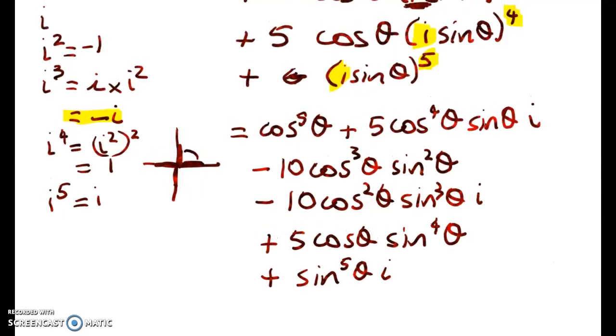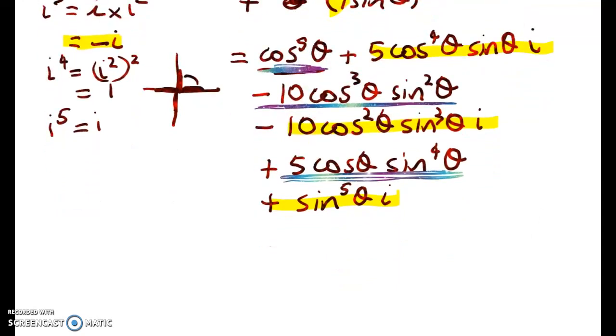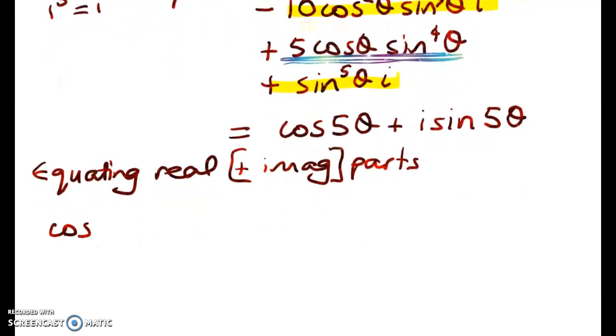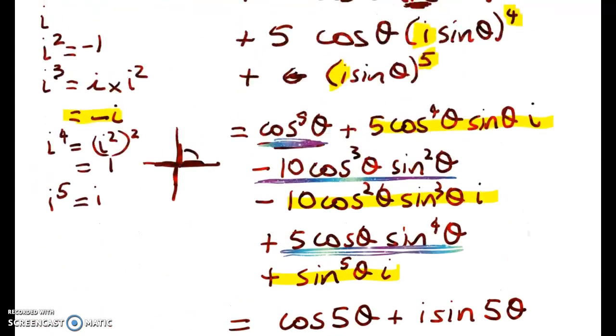So you can see that by using my powers of i, what I've now got is a bunch of terms that are real. So that one's real and that one's real. Now these ones, that one's imaginary, that one's imaginary, and that one's imaginary. So we're ready now to equate the left-hand side and the right-hand side. So we know that all of this is equal to cos of 5 theta plus i sine of 5 theta. So then we need to explain what we're doing. So equating real and imaginary parts. Well, actually, we're not going to bother with the imaginary parts. We're just going to dump them at the side of the page.